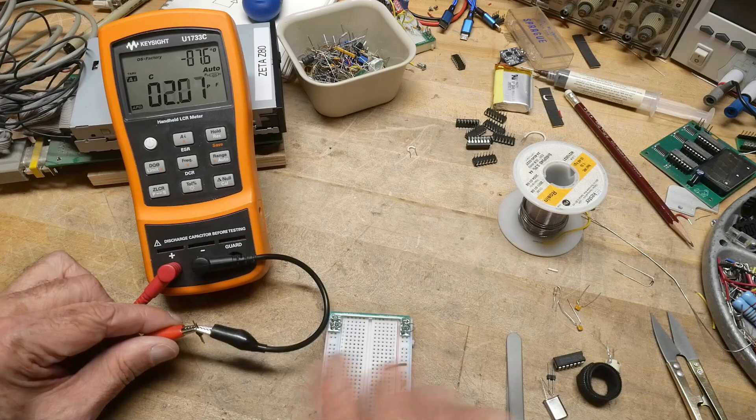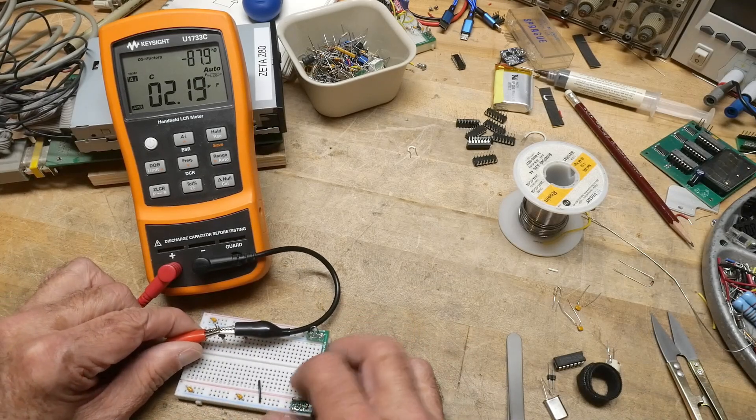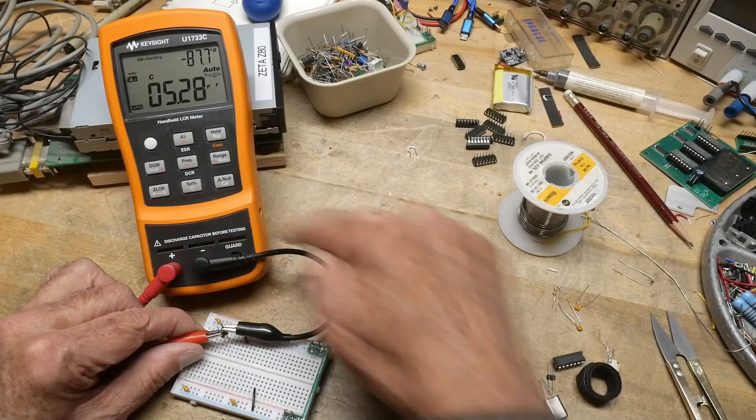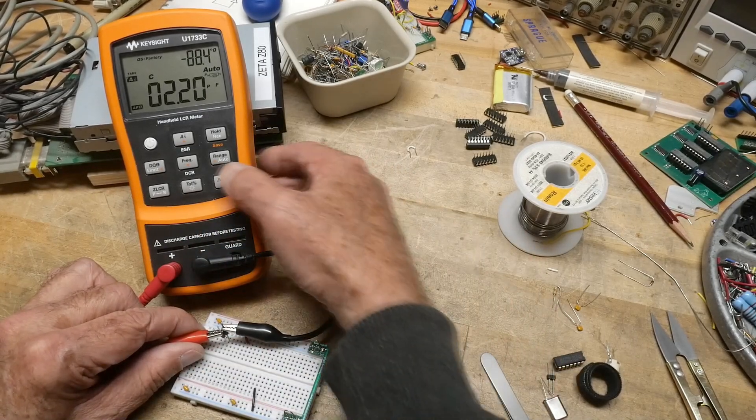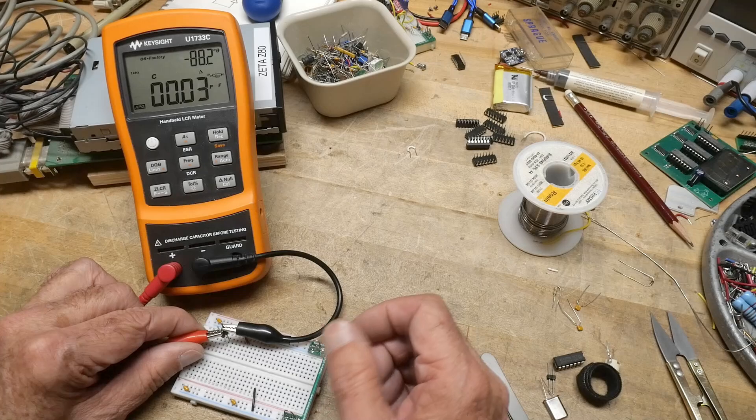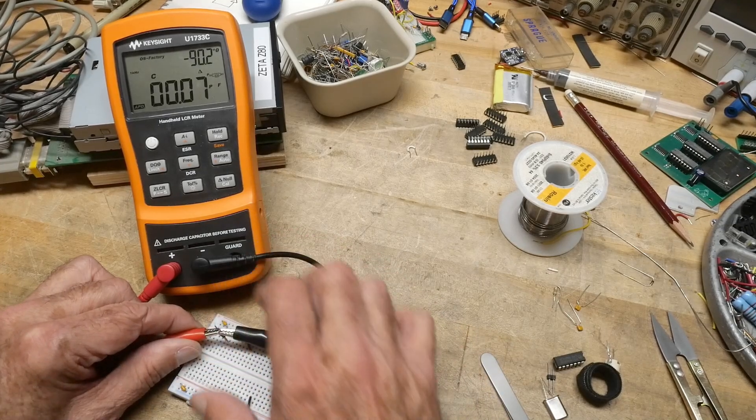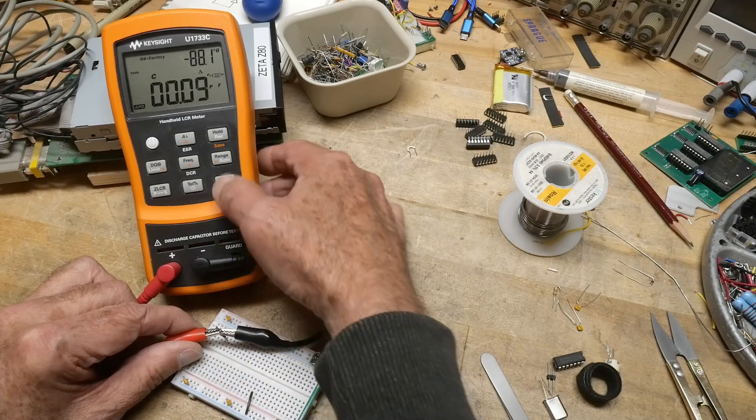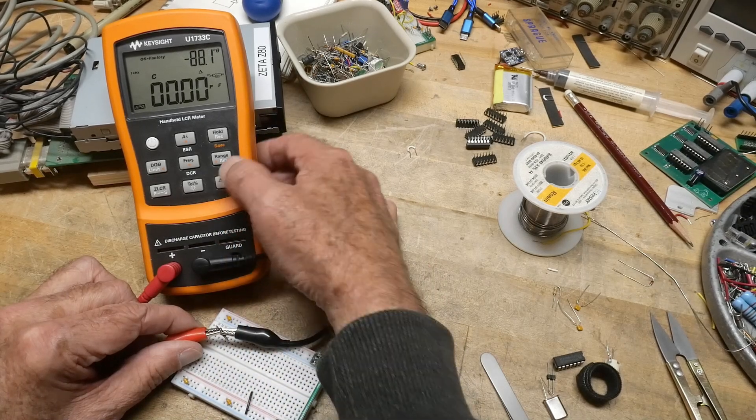So we're going to have it like this. All right. So I've got about 2.2 picofarads of stray capacitance just in the leads and stuff. So I can hit null. And now we have zero picofarads. We have zero picofarads. Let's null it again. There we go.